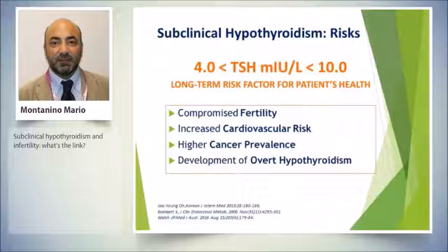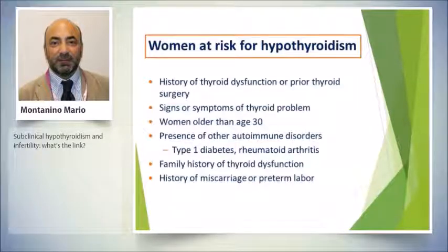Patients with a TSH between four and ten have compromised fertility, increased cardiovascular risk, a higher prevalence of cancer, and risk to develop overt hypothyroidism. Women at risk include those with prior thyroid surgery or dysfunction, women over 30, patients with autoimmune disorders, and importantly for us — patients with a history of miscarriage and preterm labor.